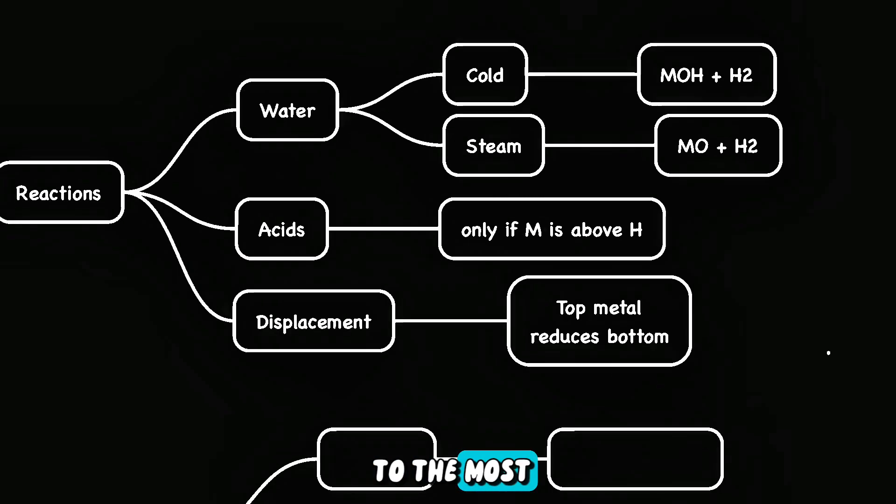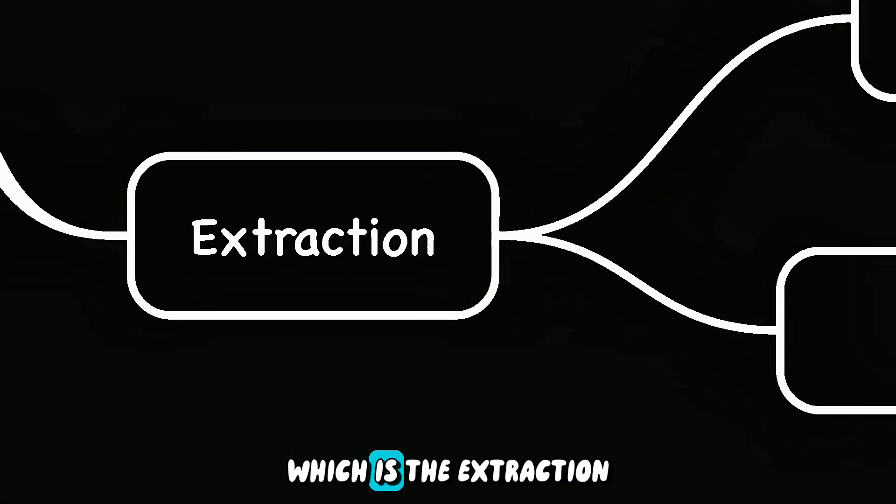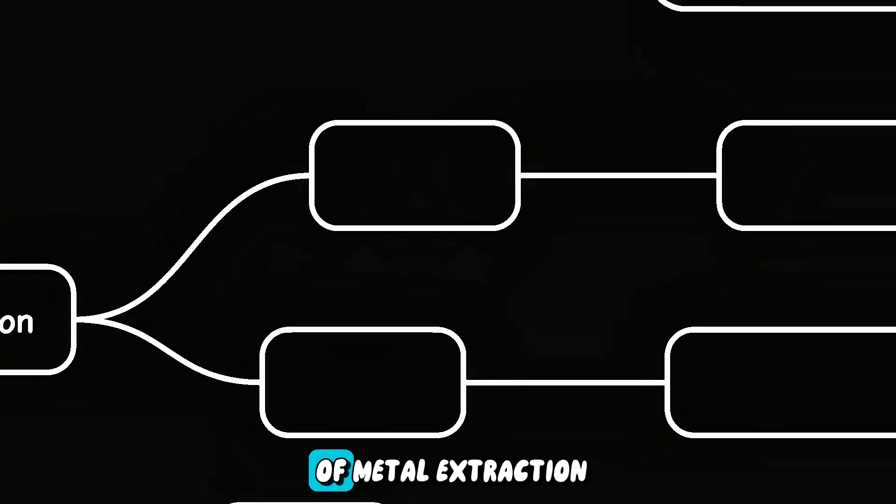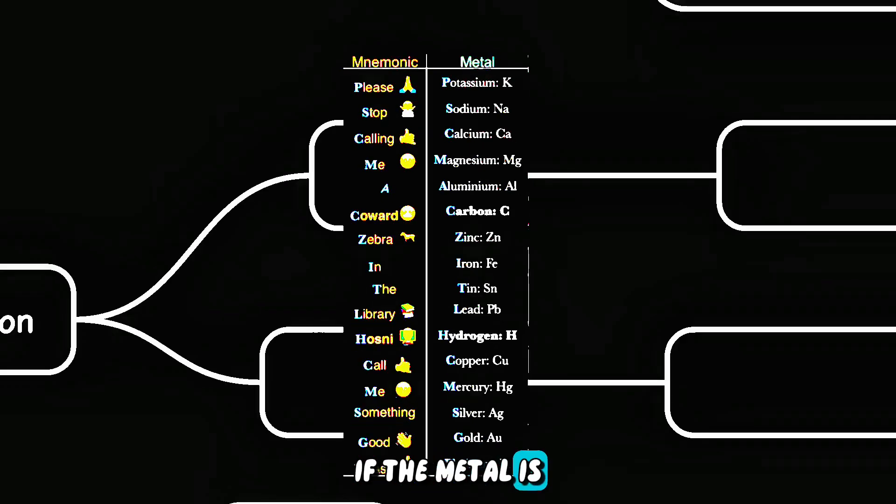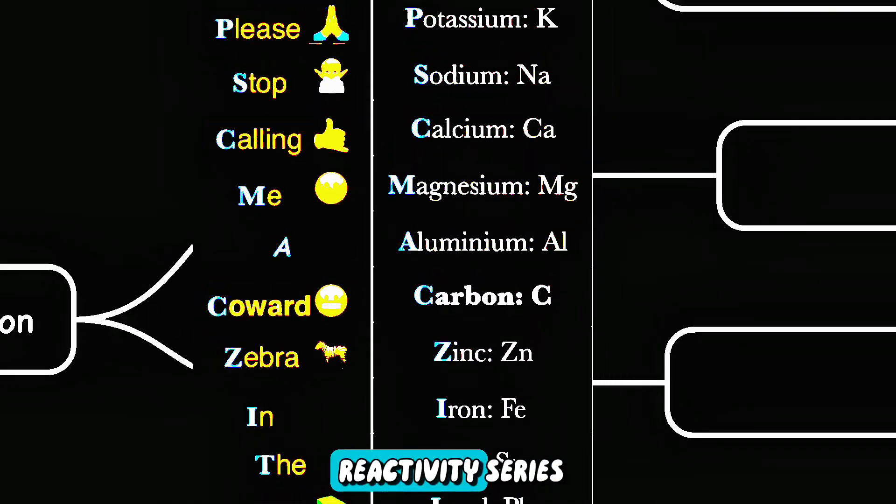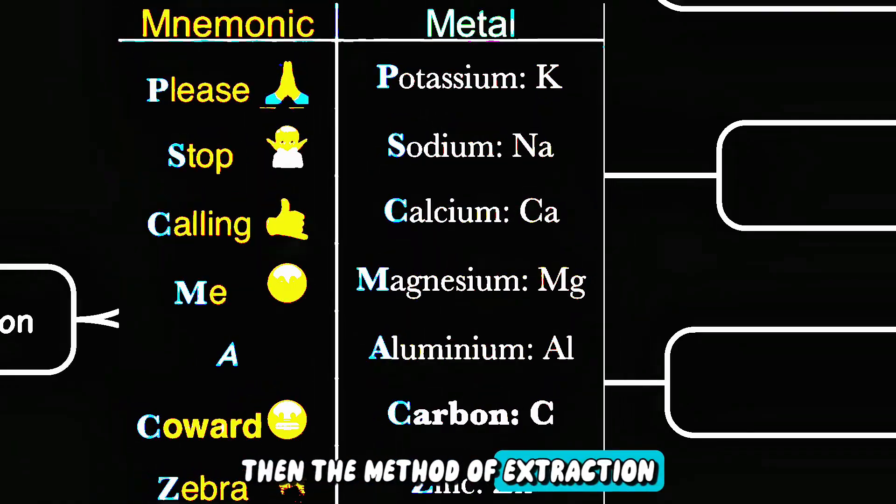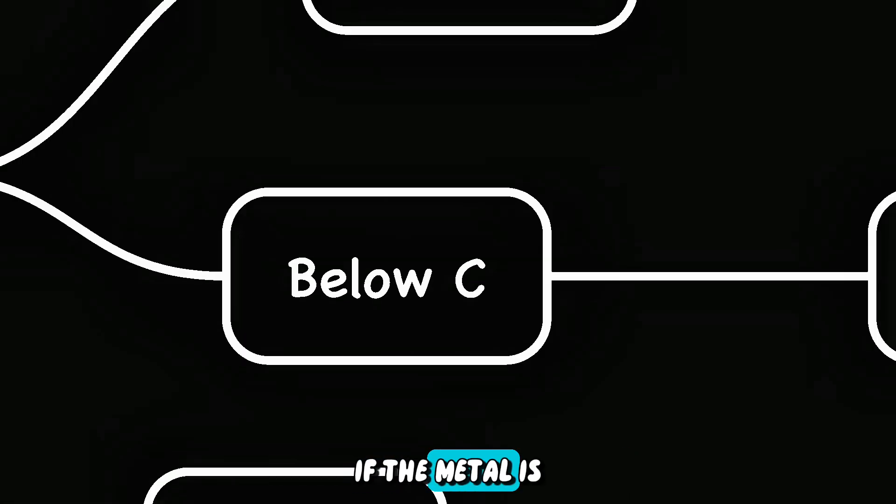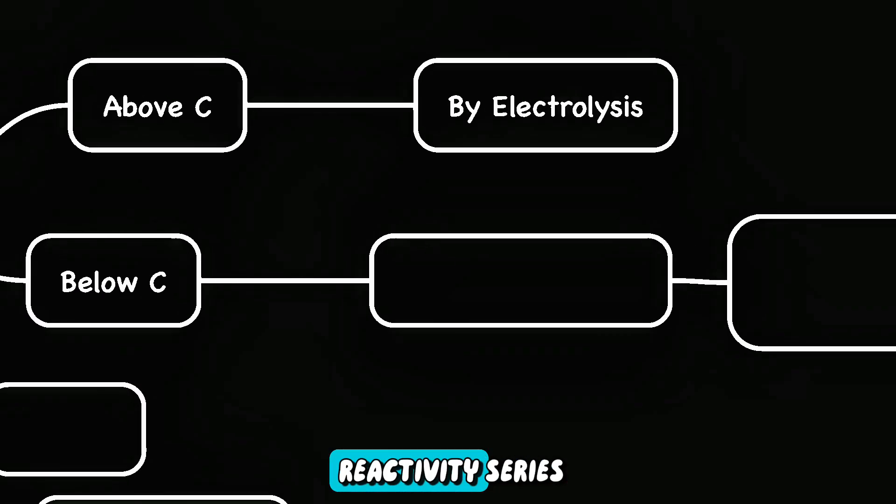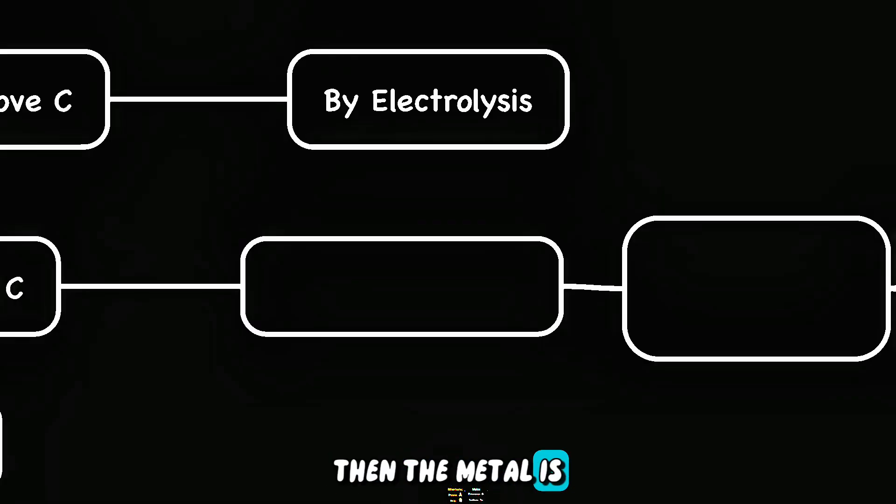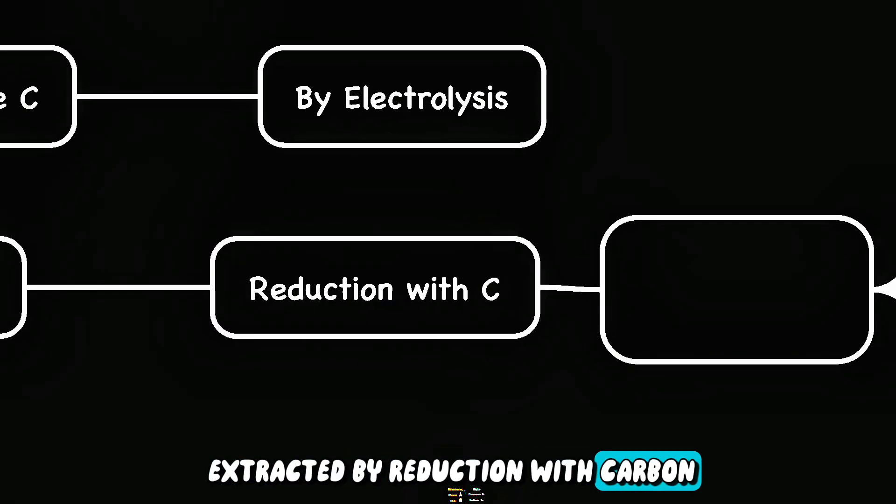We will now move to the most important part of this topic, which is the extraction of metals. To determine the method of metal extraction, you have to check the reactivity series. If the metal is above carbon in the reactivity series, then the method of extraction is going to be electrolysis. If the metal is below carbon in the reactivity series, such as iron, then the metal is extracted by reduction with carbon.